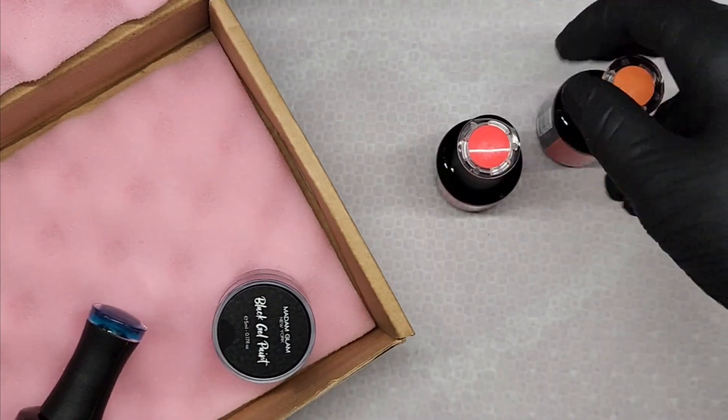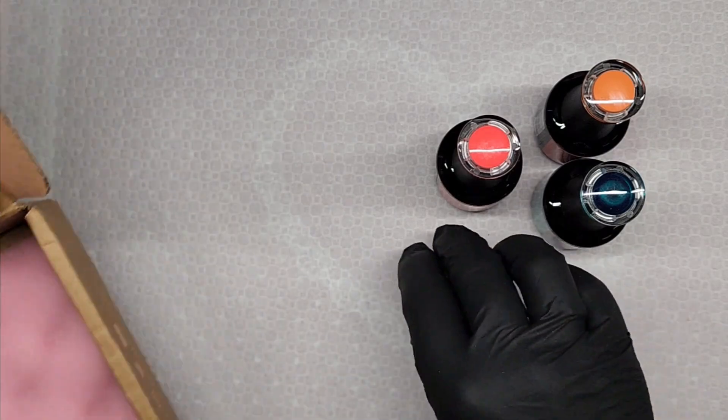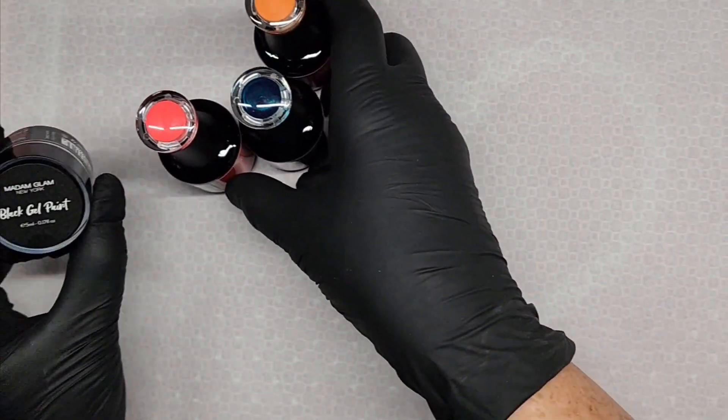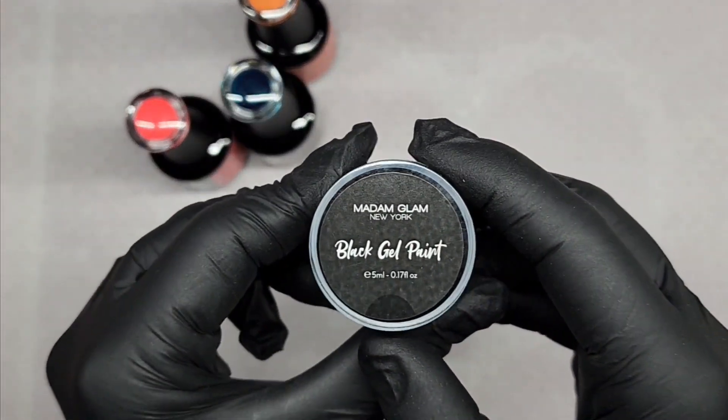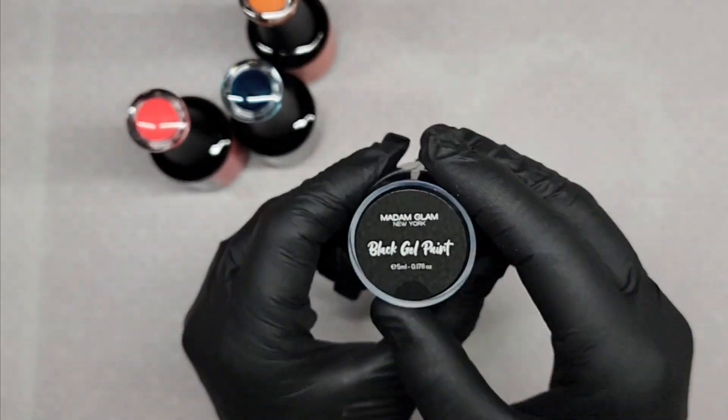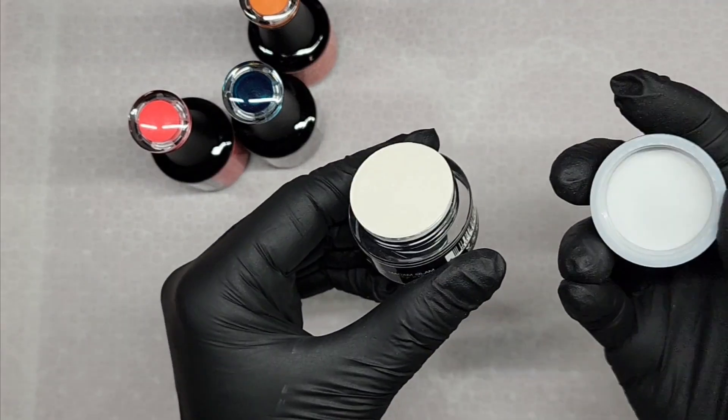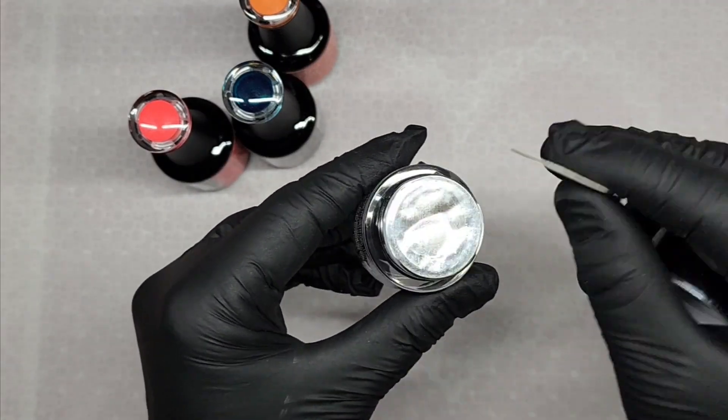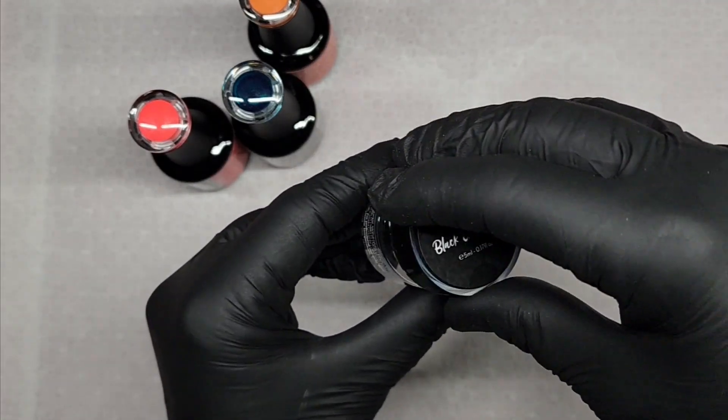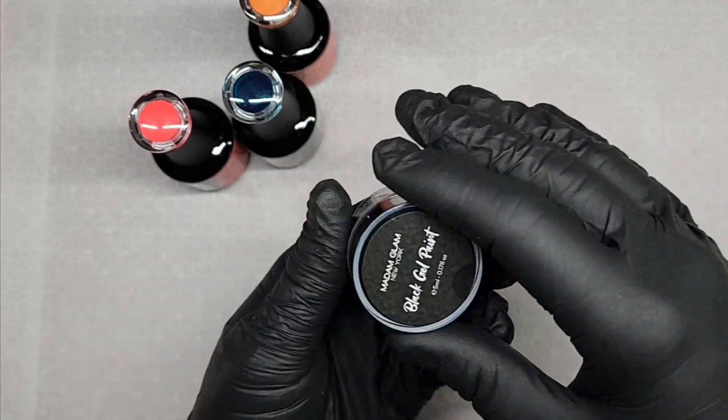I picked kind of bright summery colors. I got the black gel paint—I have the white gel paint and wanted to get black to have both the black and the white.